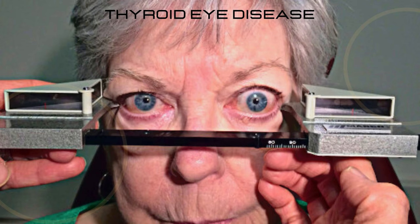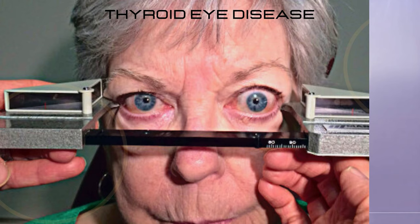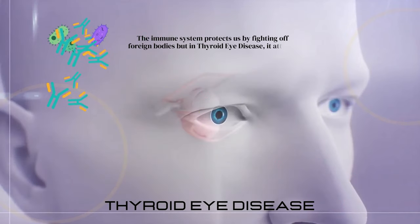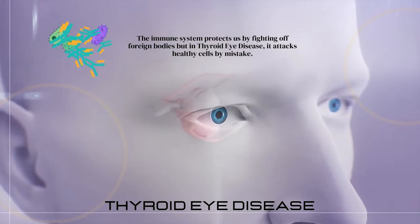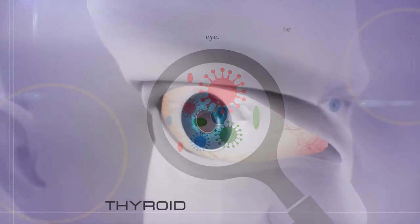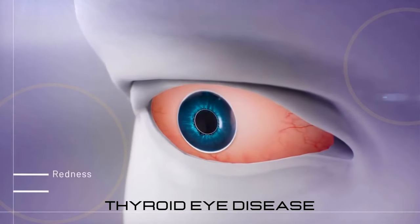Let's meet Graves' disease, or thyroid eye disease. It is a type of autoimmune disorder that causes discomfort and threatens vision. The immune system protects us by fighting off foreign bodies, but in thyroid eye disease it attacks healthy cells by mistake — specifically the muscle and fat tissue behind the eye.